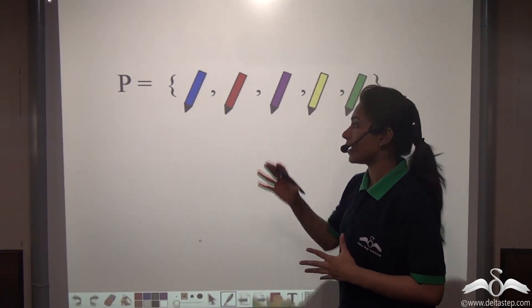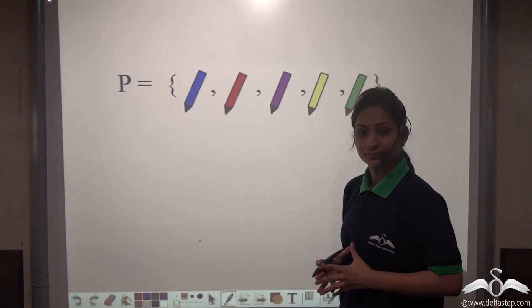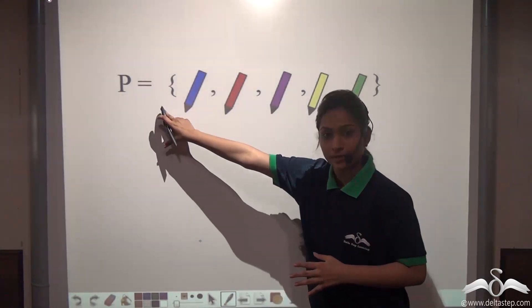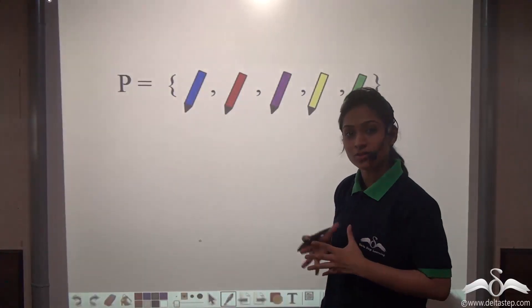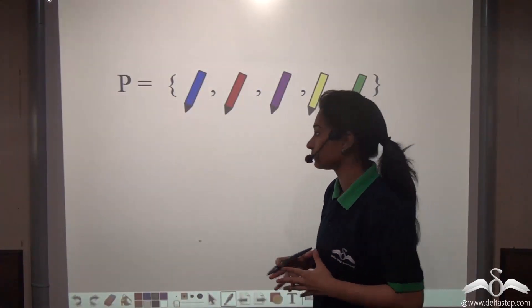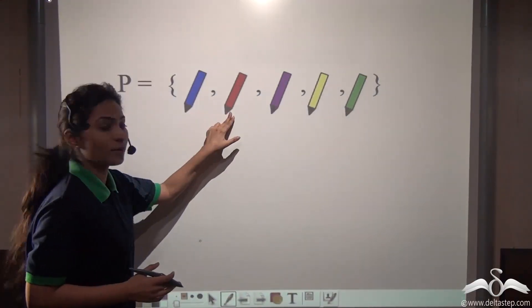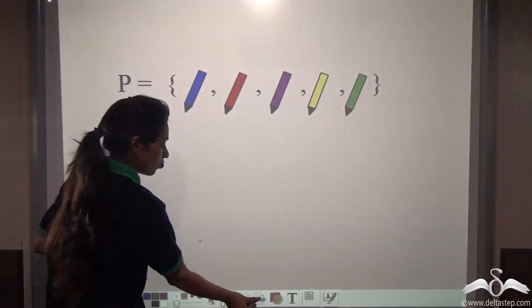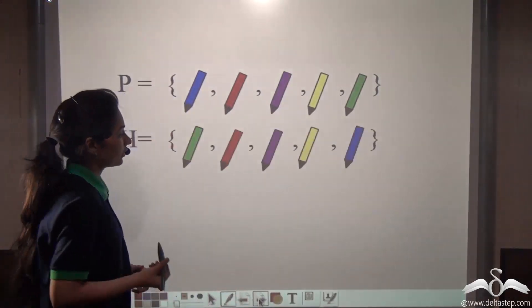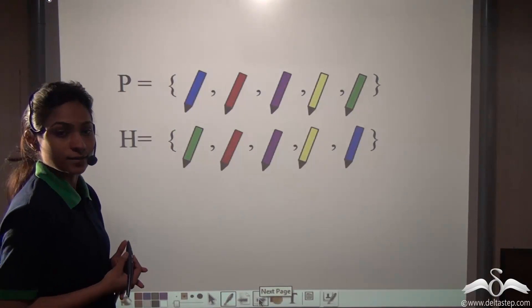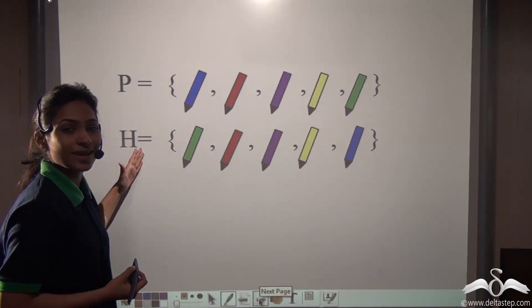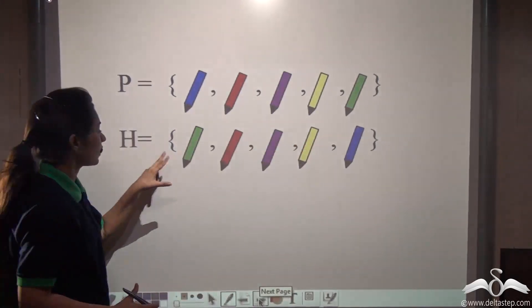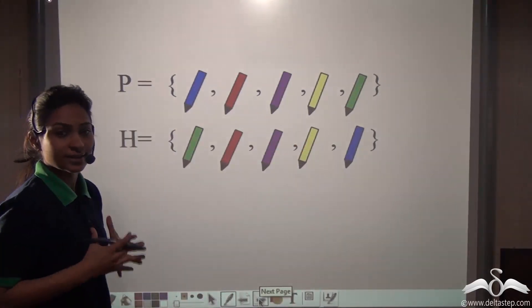Suppose you have a set of pens P. The set of pens you are having is denoted as P here. The colours you have are blue, red, purple, yellow and green. Now your friend is having these colours too — a set of pens named as H. This set H is what your friend is having.